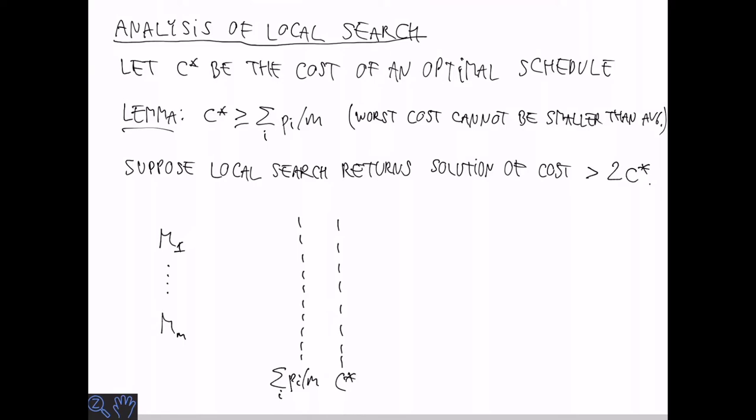Now suppose that the local search returns a solution of cost more than 2 times c star. We have the m machines, we have the average cost, and c star, which is greater than or equal to the average cost.